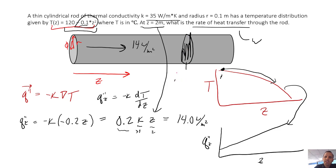So that cross-sectional area is going to be equal to pi times our radius squared. To get the absolute rate of heat transfer in the z direction, that would be equal to our flux in the z direction times our area, which would be 14.0 watts per meter squared times pi times 0.1 meters quantity squared. If we go through and do the math, we end up with 0.44 watts. And remember that is only true at the specific point where z equals 2 meters.